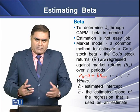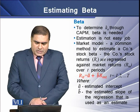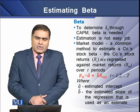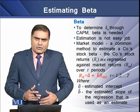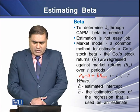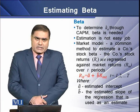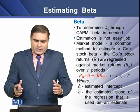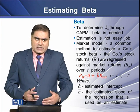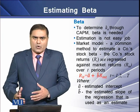If we derive the equation of this regression model, we can have an equation like R_T = A-hat + beta-hat × R_M, over the time period T. In this equation, A is the estimated intercept and beta is the estimated slope of the regression, which is used as an estimate to measure the riskiness of the investment with reference to the whole market.